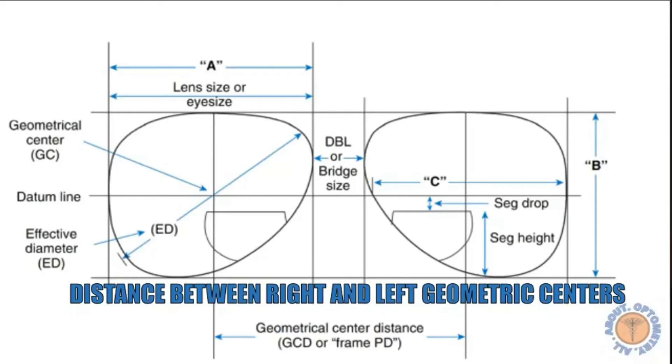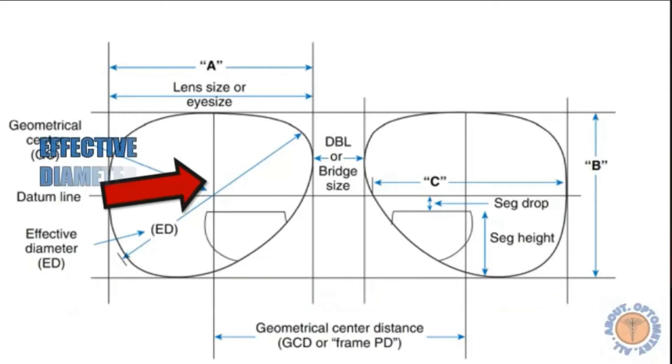If we go a little further we will talk about something more commonly discussed, the effective diameter. The effective diameter is the most common mistake that some opticians and optometrists make while ordering lenses. The effective diameter generally is twice the distance from the geometric center of the lens in the boxing system to the most far away point of the lens edge.